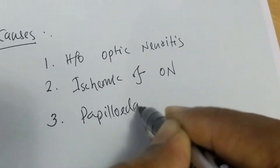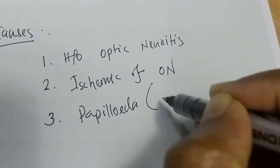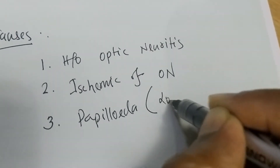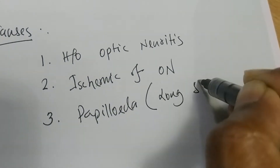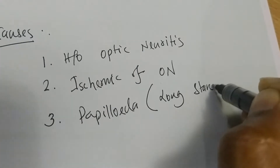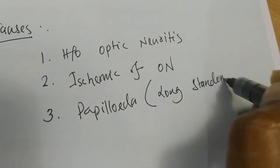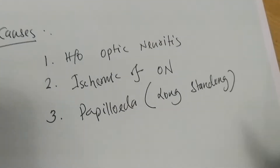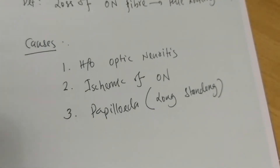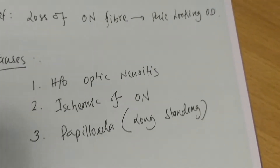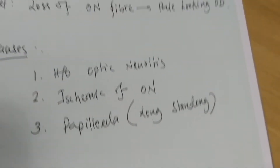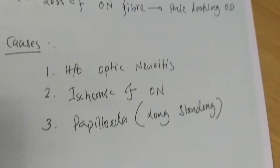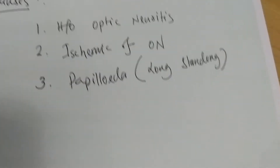Cause number three: long-standing papilloedema. Long-standing papilloedema may lead to loss of optic nerve fiber, resulting in optic atrophy.